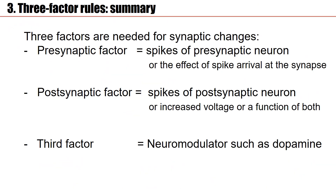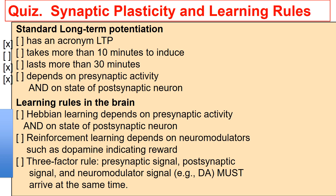Three factors are needed for synaptic changes according to this experiment: a presynaptic factor — which could be spikes of the presynaptic neuron or the effect of spike arrival at the synapse, a low-pass filter of the spike — a postsynaptic factor, which could be spikes of the postsynaptic neuron, increased voltage, or spikes minus expected number of spikes for that situation — and a third factor, which could be a neuromodulator such as dopamine. Standard long-term potentiation is Hebbian learning, depending on pre- and postsynaptic activity. Reinforcement learning depends in addition on neuromodulators such as dopamine indicating reward. The three-factor rule needs a presynaptic signal, postsynaptic signal, and neuromodulator signal, but they do not all have to occur at the same time — the neuromodulator can come with a delay.